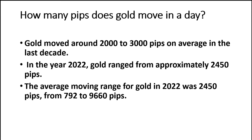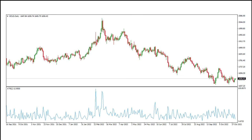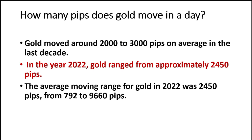But you need to know how to trade gold. Here are very important stats: gold moves around 2,000 to 3,000 pips on average in the last decade. Just in 2022, gold ranged approximately 2,450 pips on average, from 729 to 9,600 pips. Looking at this chart, you can see February of this year had increased volatility — around 9,000 pips per month. That's an extreme due to the war in Russia and Ukraine, which changed the market a lot. But on average, during the day, you can expect around 2,000 to 3,000 pips.